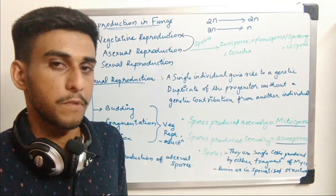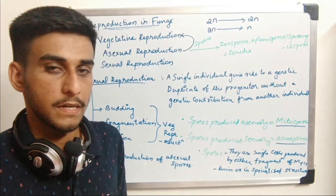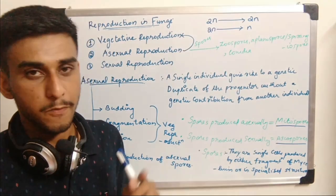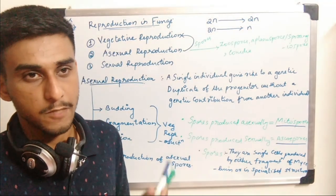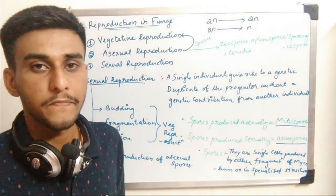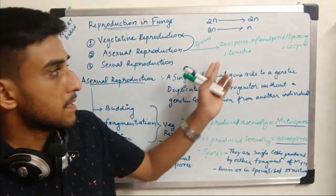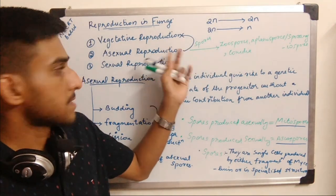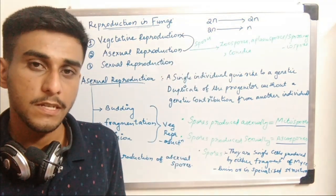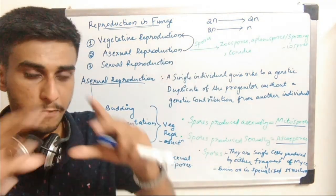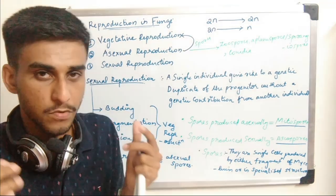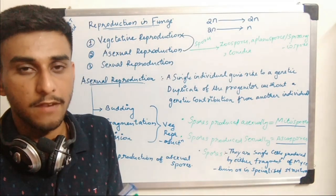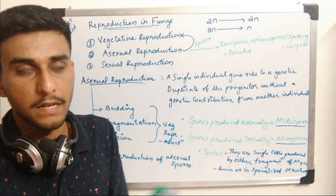The spores are produced mitotically to produce a large number of spores. These spores are produced in a specialized organ known as the sporangia. Asexual spores may also be produced during cell fragmentation.